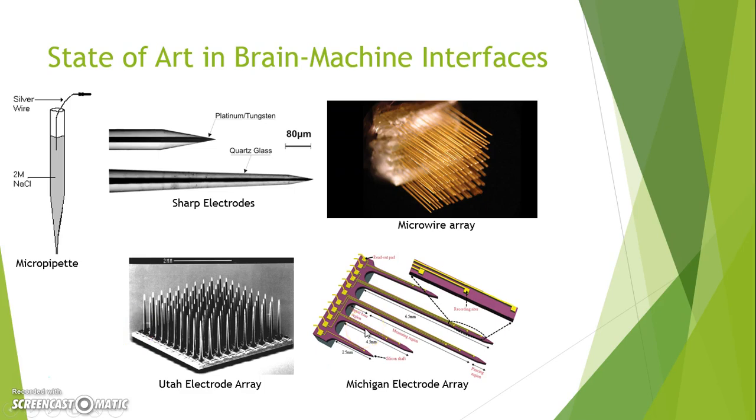On this slide you can see the popular electrodes used for extracellular recording. Current state-of-the-art include micropipets, sharp electrodes, microwire arrays, Utah electrode arrays, and Michigan electrode arrays. The main difference is that the Michigan electrode array has multiple recording sites on its single needles. To record neural activity, all of these electrodes need to be inserted into the brain.